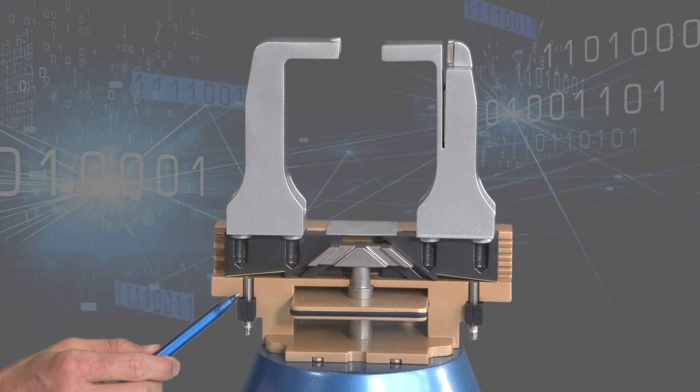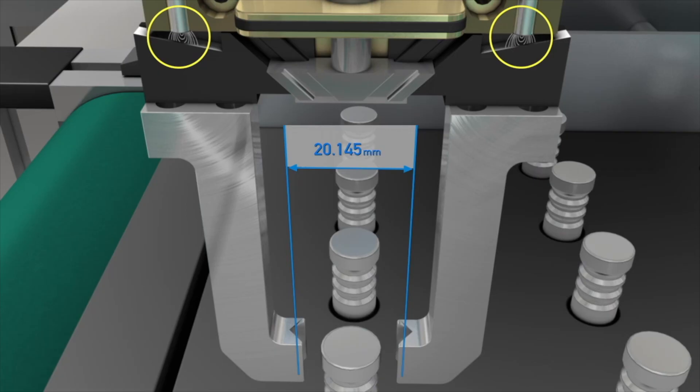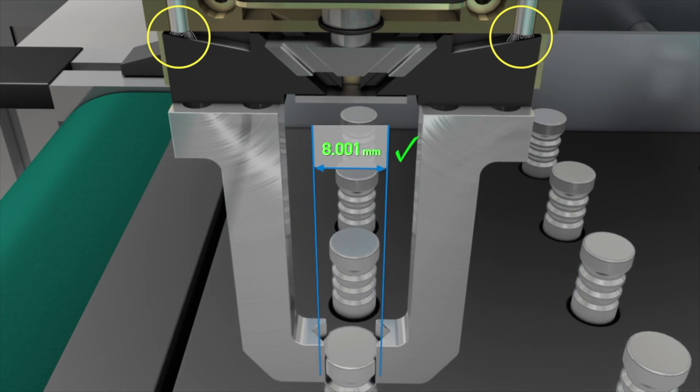Installed at a gripper arm, the sensors reliably detect even the slightest change in position down to the micrometer range.